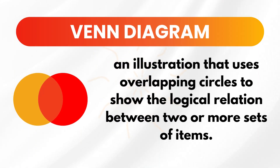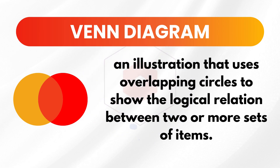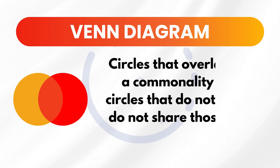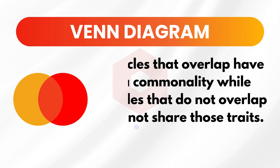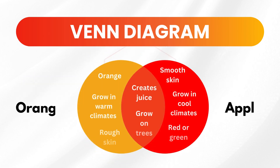Last among the mathematical models are Venn diagrams. A Venn diagram is an illustration that uses overlapping circles to show the logical relation between two or more sets of items. Circles that overlap have a commonality, while circles that do not overlap do not share those traits. As we can see in the example, apple and orange have both similarities and differences.